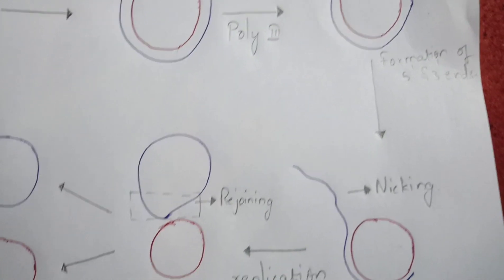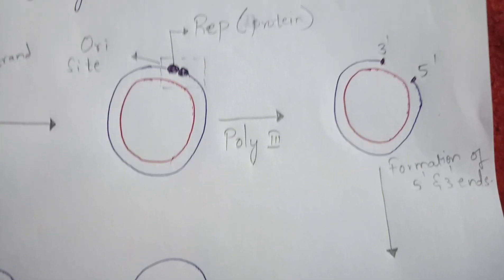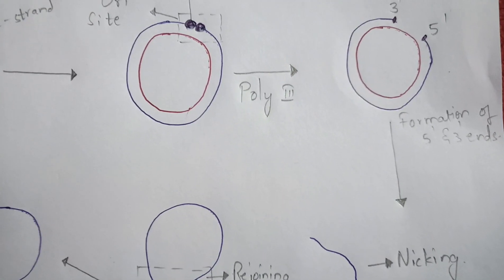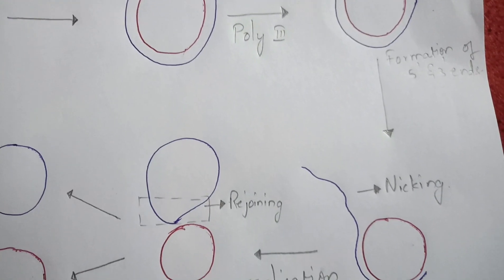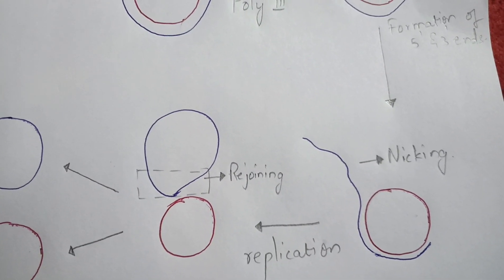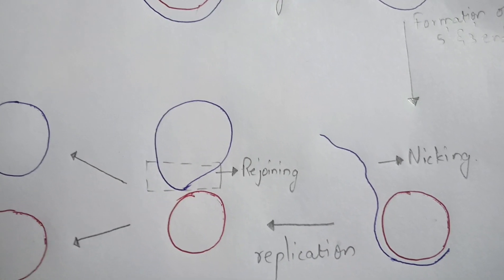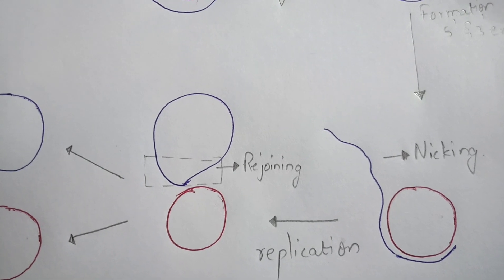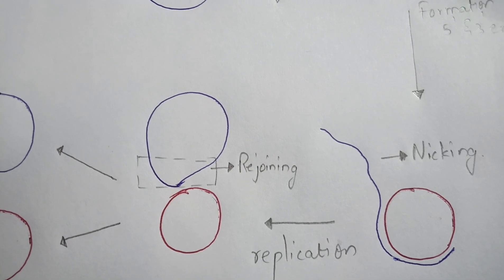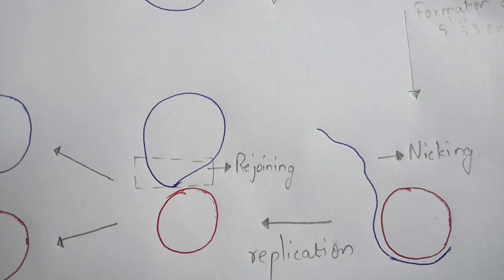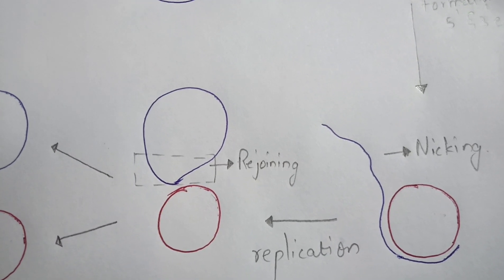After this process, there is a division in the second strand due to the REP protein, and formation of 5' and 3' ends takes place. After that, the whole second strand will be replicated. This starts nicking — nicking means separating — so the first and second strand separation takes place.